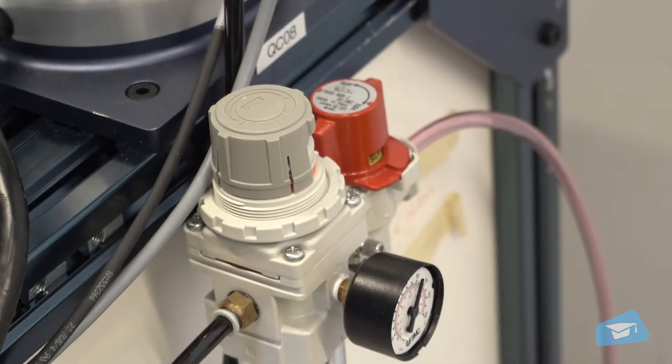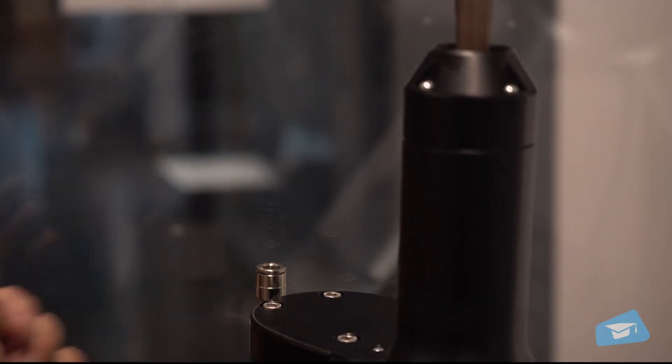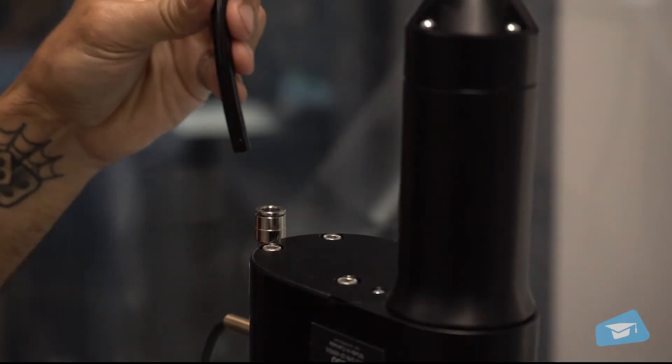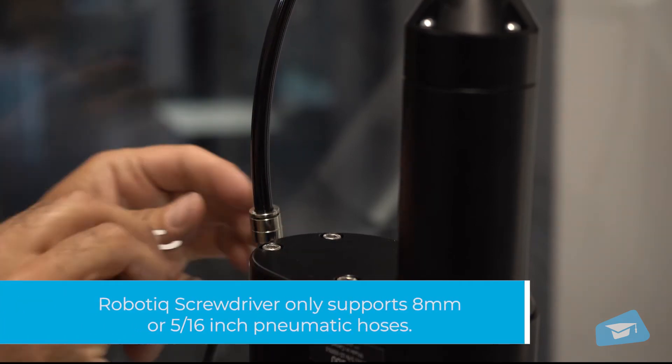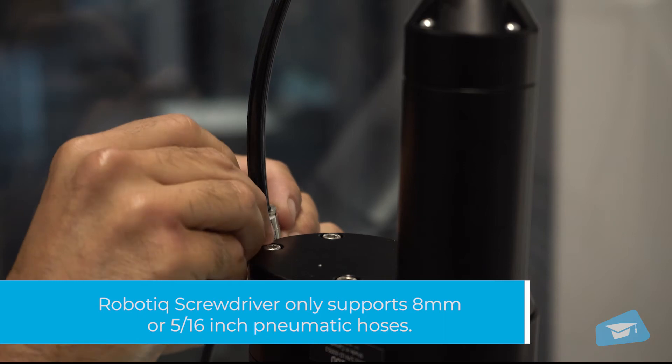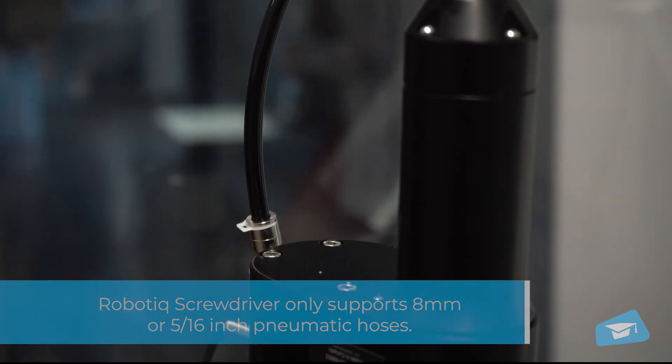Connect the compressed air supply line to the screwdriver. Remove the safety clip from the protector plug. Connect the pneumatic hose to the air supply inlet port. Replace the safety clip. Pull slightly to make sure the air tube is tightly linked.